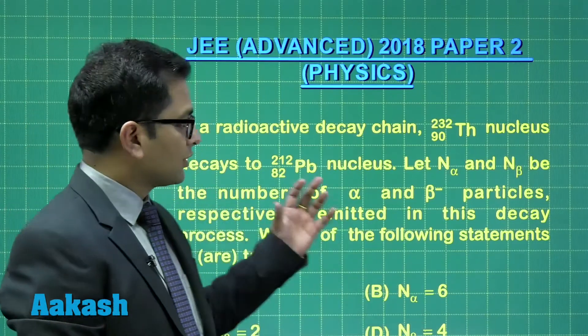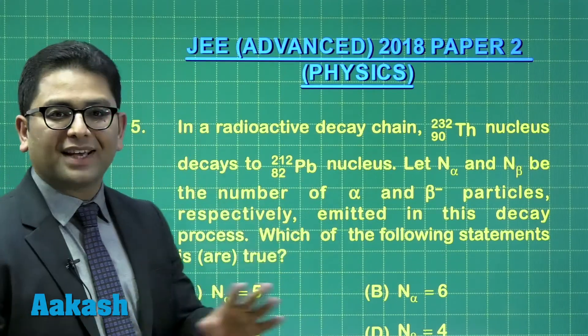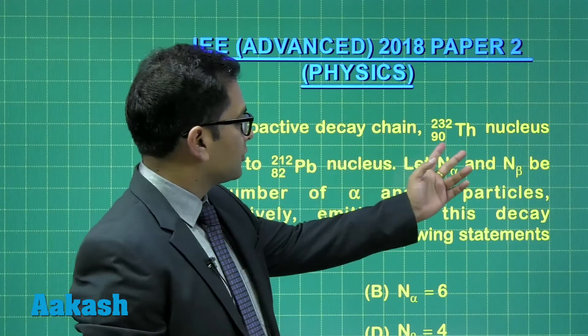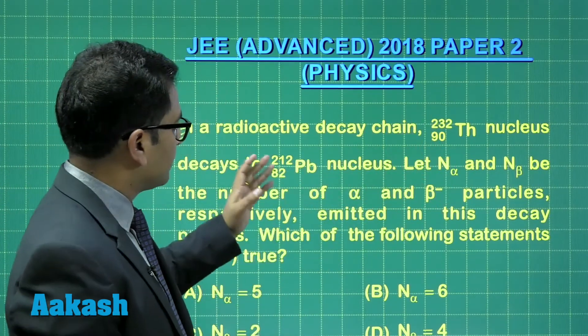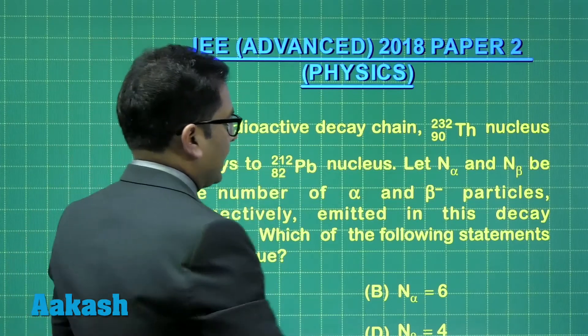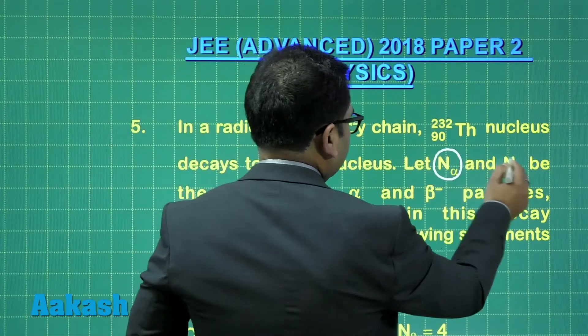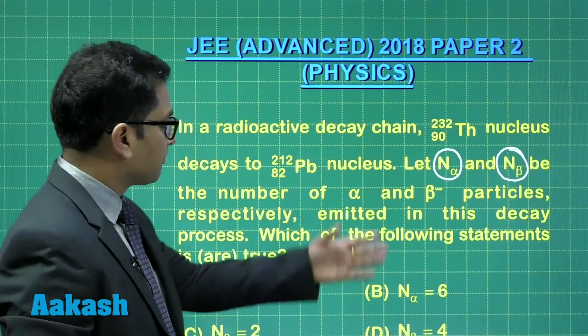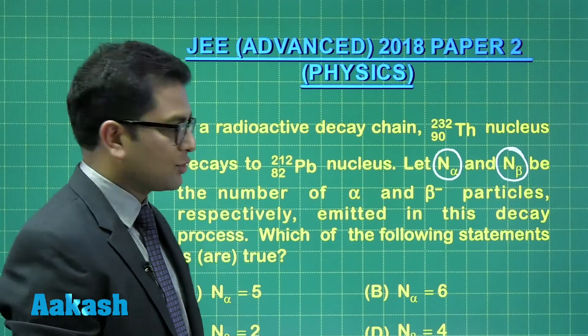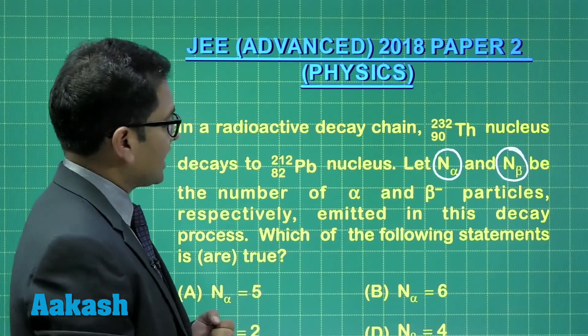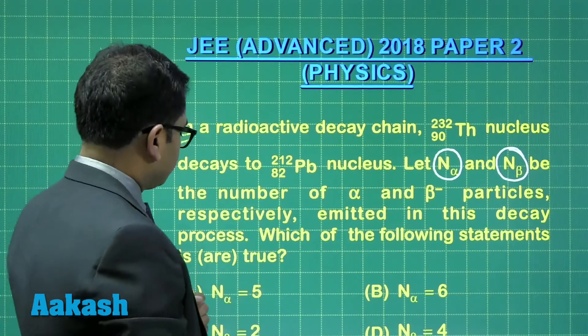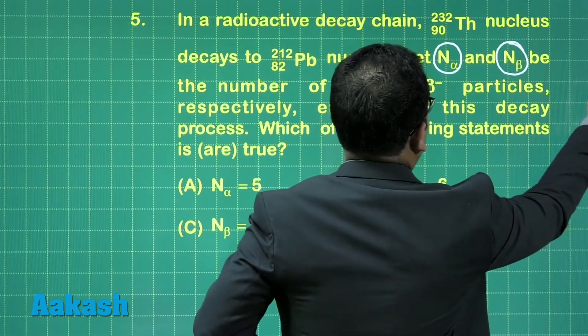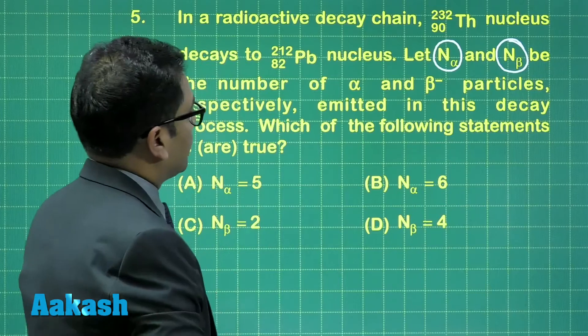Question number five from modern physics and nucleus, a very straightforward question. This says that thorium-232 with atomic number 90 decays into lead. N_alpha and N_beta are the number of alpha particles and beta particles which are emitted. Beta, of course, is beta minus - one has to be careful because there is beta plus as well.